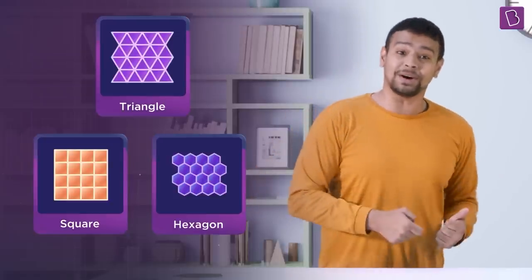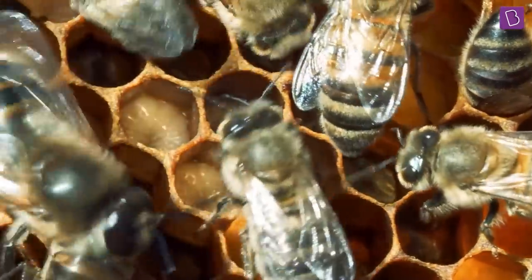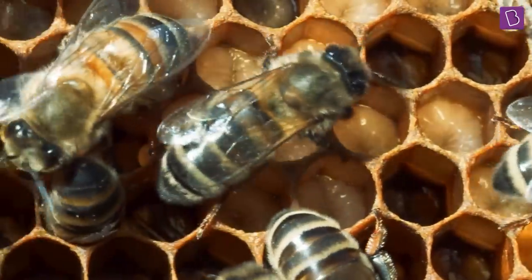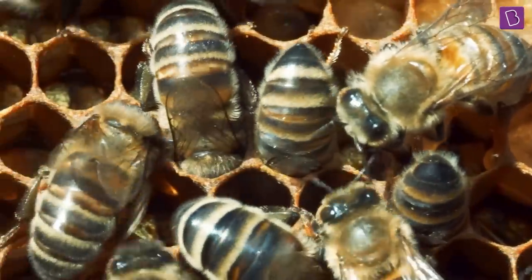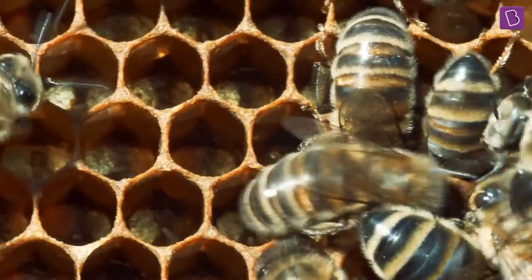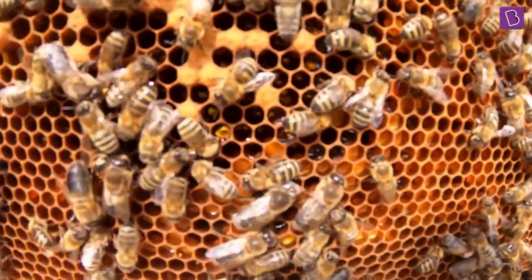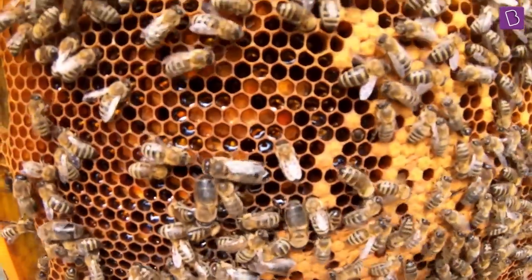So they are the only polygons that can tessellate. You see, the bees have to work really hard to create the wax, the building material for the walls of their home. So they need a shape that gives them the most utilization. Now, it's not that they learnt math. It's just that they're pushing around to create that space and it so happens to be the largest shape that's possible.